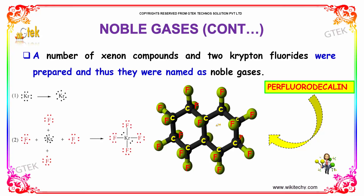Here is a typical example. You are able to see Krypton which merged with Fluorine to form a combined compound with the electron pair.